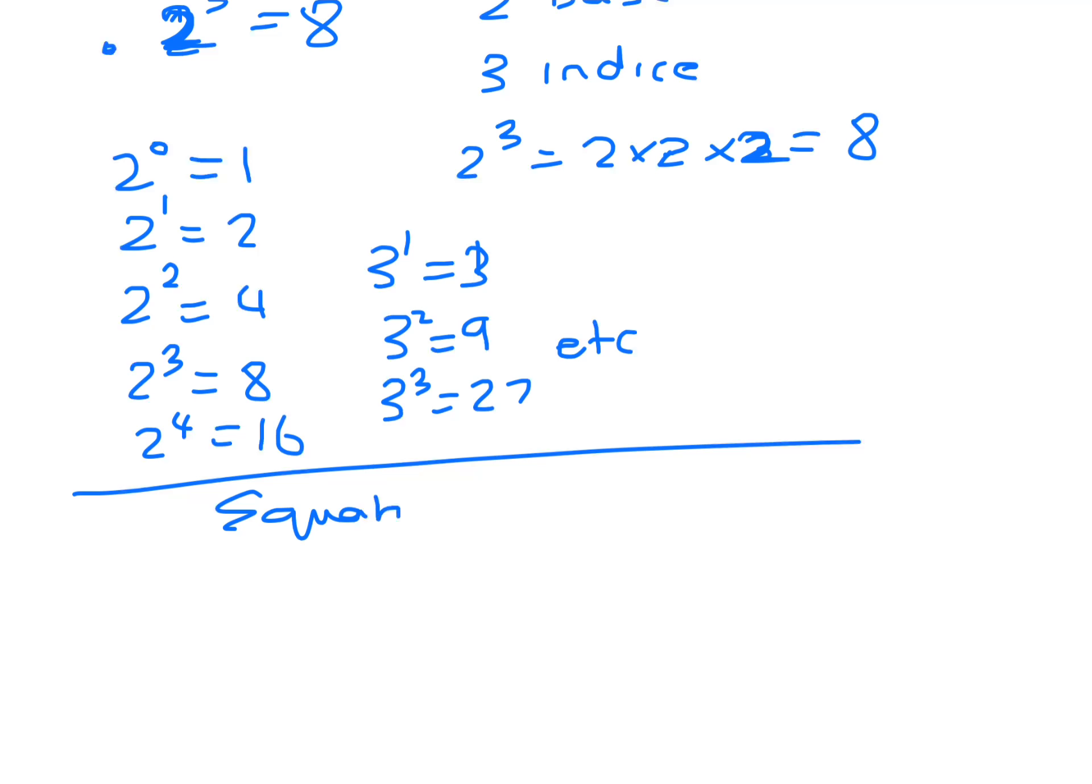So when we have an equation and we want to work out what the indice is, say you have 2 to the x equals 8, what we're really doing here is we're working out 2 to the power of what will give you 8.